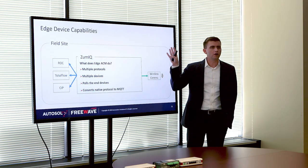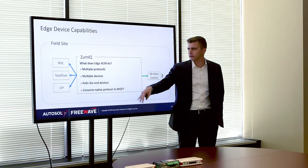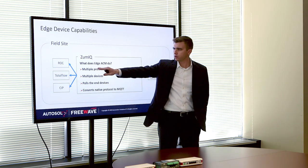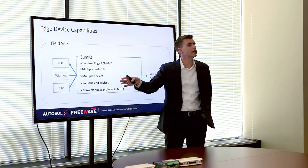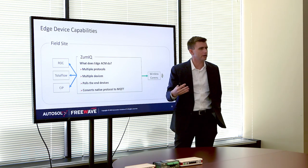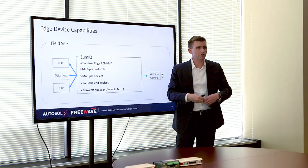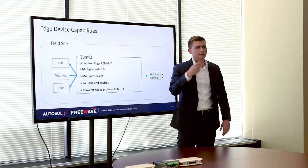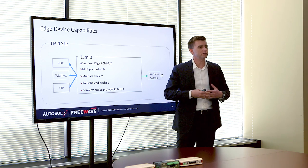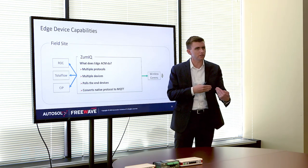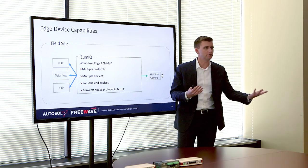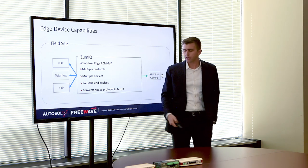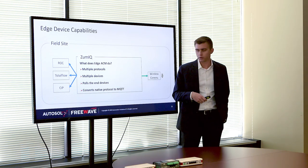To drill down more into what's happening on the edge device — here's a ZoomIQ, for example. Edge ACM is pulling multiple protocols simultaneously from multiple devices. It's not where you can only pull five total flows or five Allen Bradleys at a time. You can do four Allen Bradleys and a ROC — you can mix and match. The only restriction on how many devices, how many tags, and what resolution is hardware-based. Edge ACM pulls multiple devices, multiple protocols, converts to MQTT or SparkplugB, and pushes that up to a broker in the field or cloud.